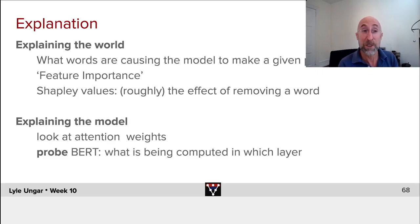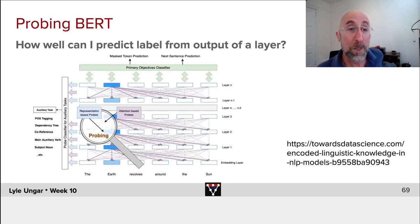The other sorts of explanations are looking at the model, trying to look at the attention weights for an attentional model, or to look inside of BERT, to probe BERT, and to see what's being computed where. One thing one can do is remember that BERT takes in an input sentence, it goes through a bunch of layers with a bunch of heads, roughly a dozen layers, dozen heads, and then it predicts the missing tokens, the masked tokens.